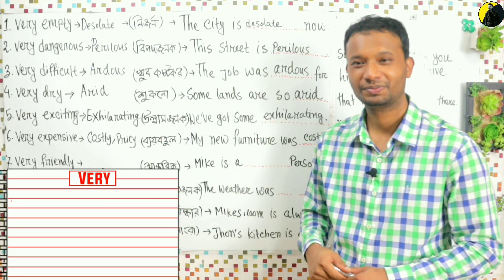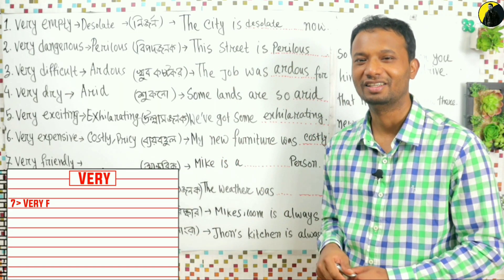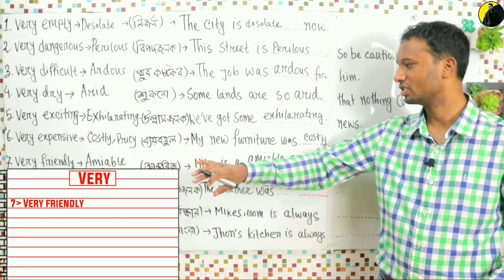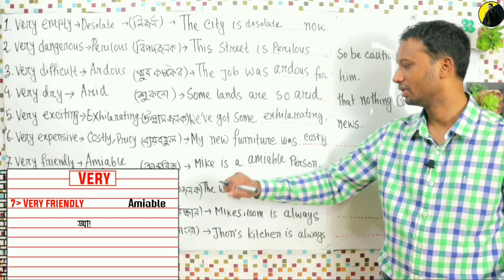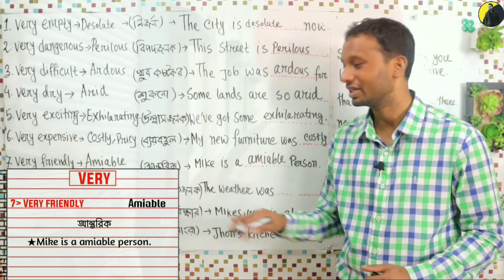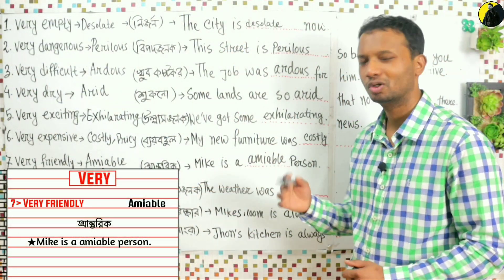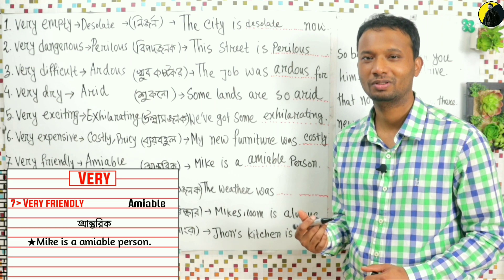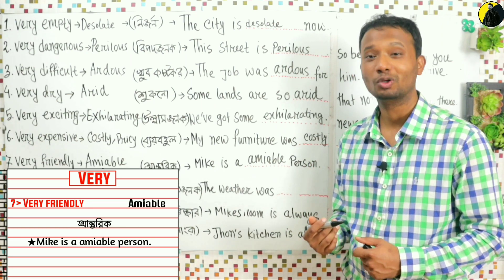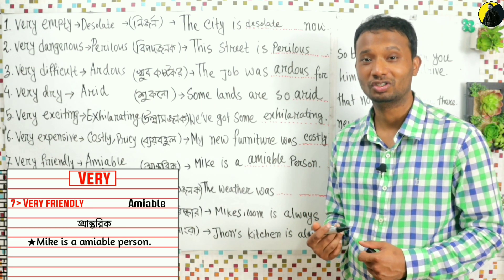Very friendly — the advanced synonym is: amiable. For example: 'Mike is an amiable person.' Repeat after me — that's the way to learn English. You can also watch CNN news or BBC documentaries to improve.